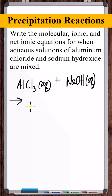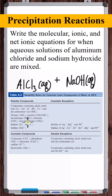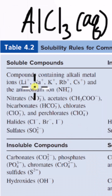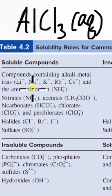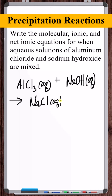For the reactant side of this equation, we mix and match cations and anions. Na⁺ interacts with Cl⁻ to form sodium chloride. Checking the solubility rules: all ionic compounds with Na⁺ as the cation are soluble with no exceptions, so sodium chloride is aqueous.